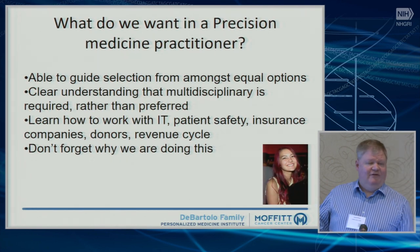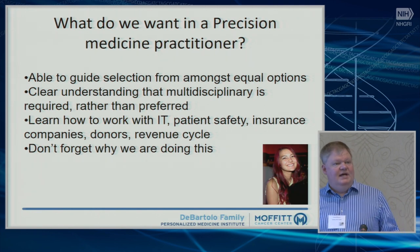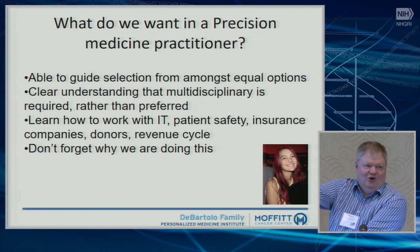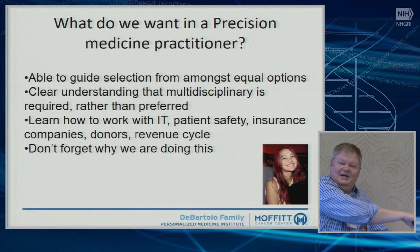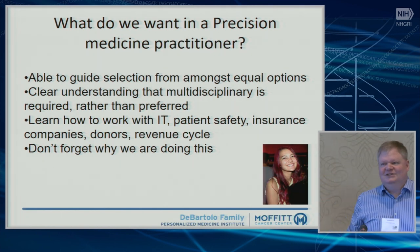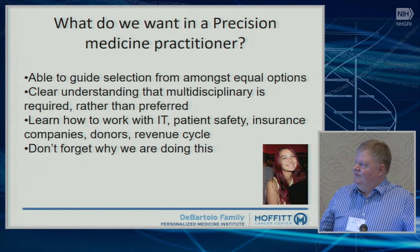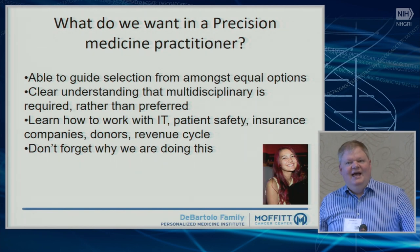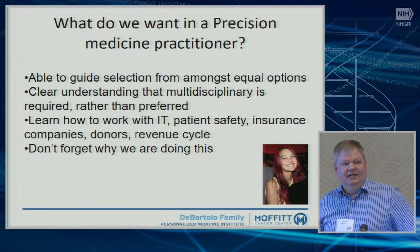We have to decide what we want out of a precision medicine practitioner. The ability to guide selection from amongst equal options — we're trained that every week in the New England Journal of Medicine, there's a clinical trial with a survival curve showing a winner and a loser. Really we're talking about first-line and second-line therapy — choosing from almost-equals. Really understanding that multidisciplinary is required, not just preferred. A medical oncologist who tries to do this alone is in trouble. A pharmacist who tries to do this alone is in trouble. They have to learn to work together — learning how to work with people who don't even speak your language.